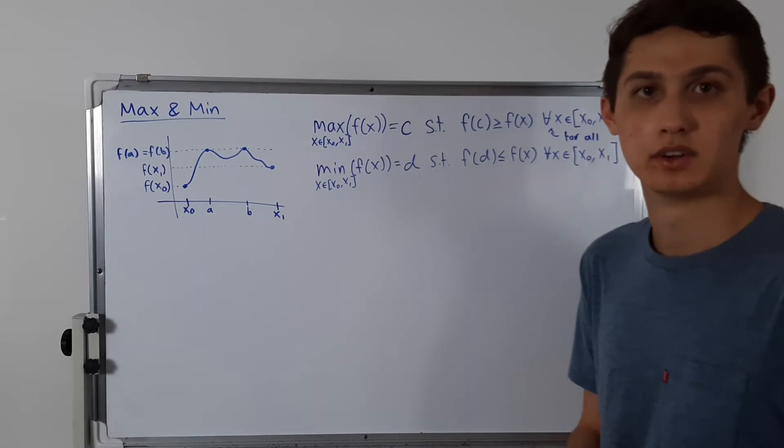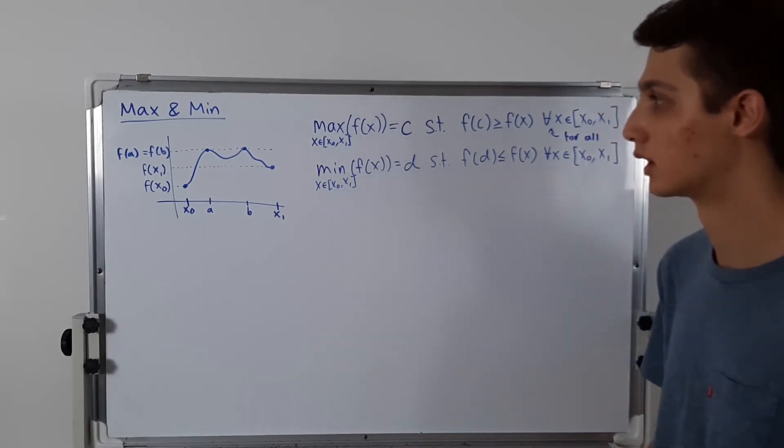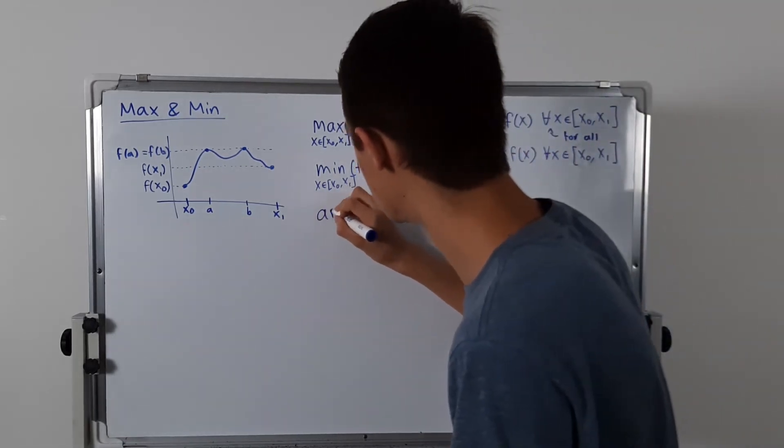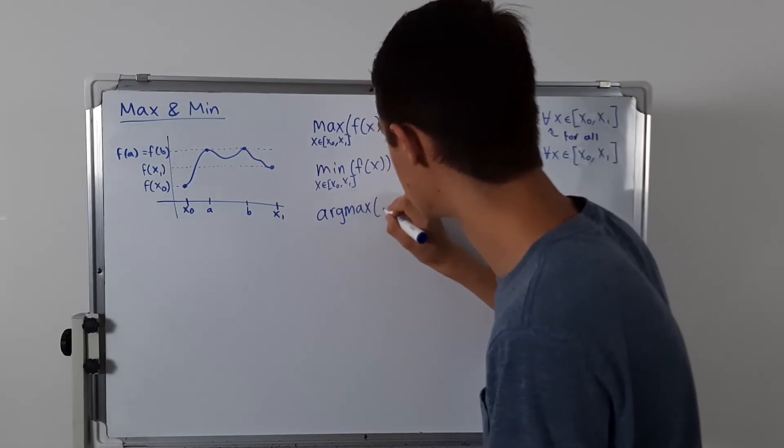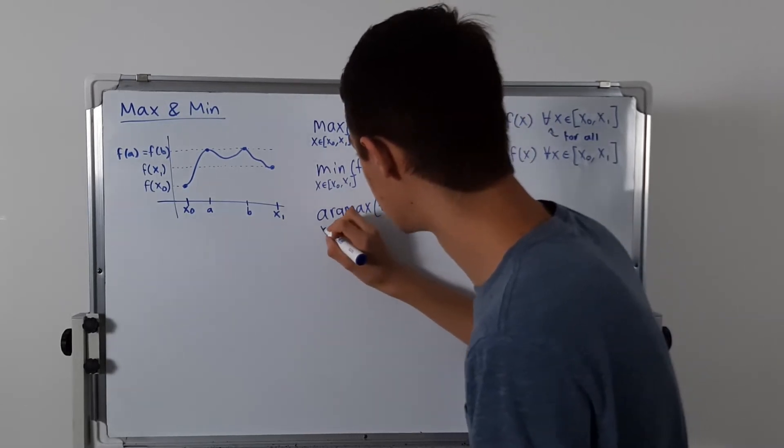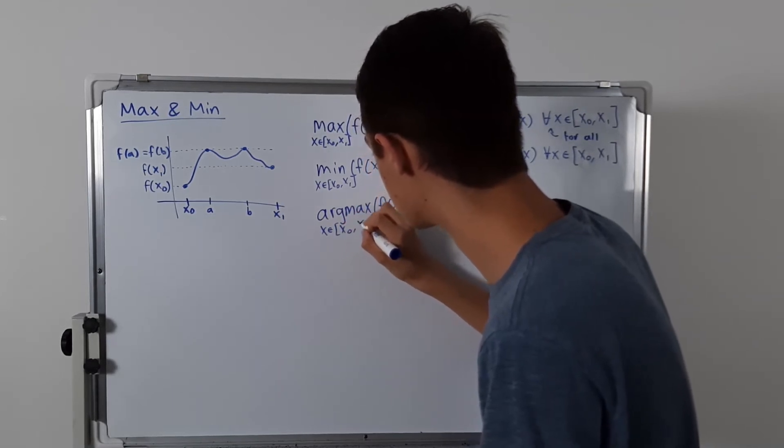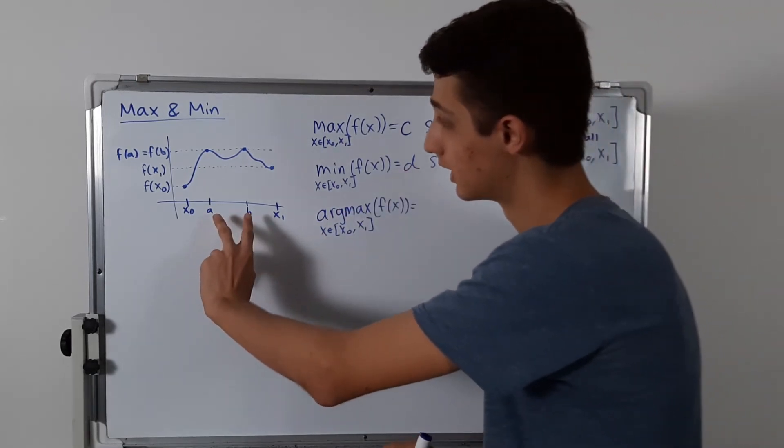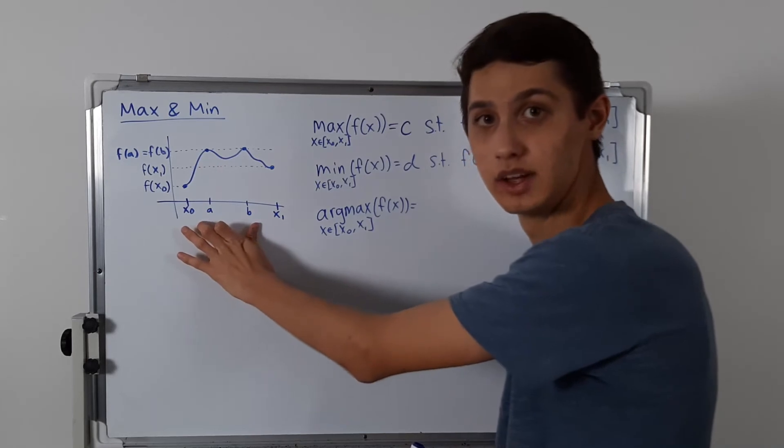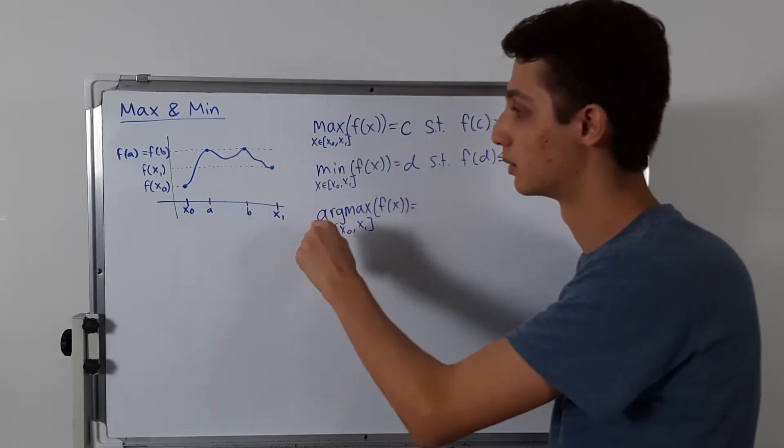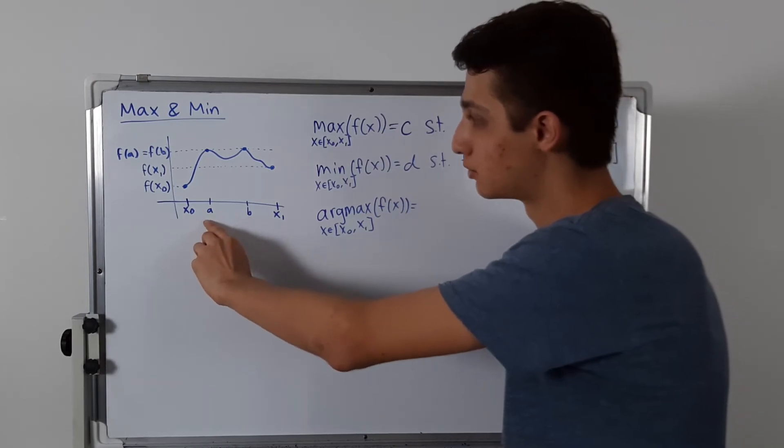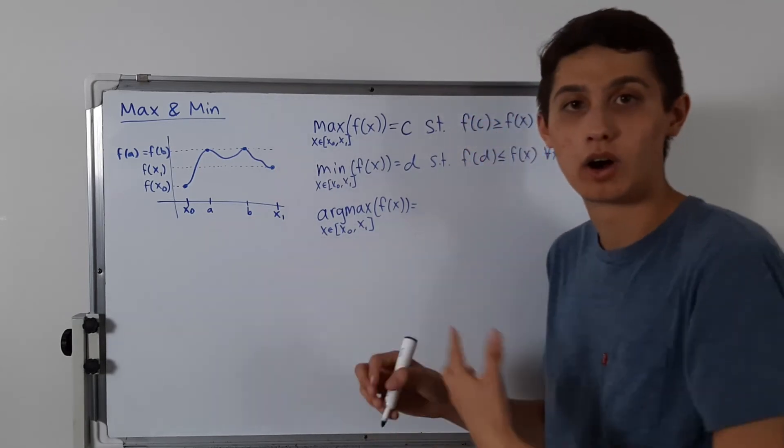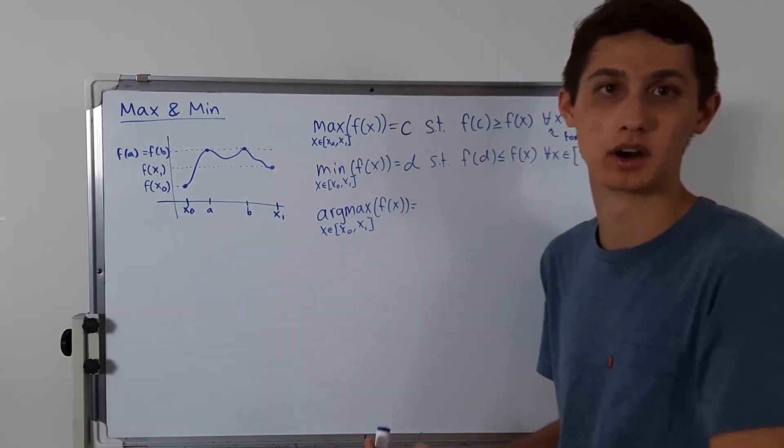Okay, so what about argmax and argmin? Because I said something about that earlier, but never defined it. So the argmax, let me just write it out first. We have argmax of f of x, and again, we are defining it on this interval from x0 to x1. So what is it? It is all the numbers that actually attain that maximum value. It's all the x values that get our function to attain that maximum. So in this case, it would be a and b, because f of a attains that maximum, and f of b also attains that maximum. So a and b are the argmax. Well, they're elements of the argmax.